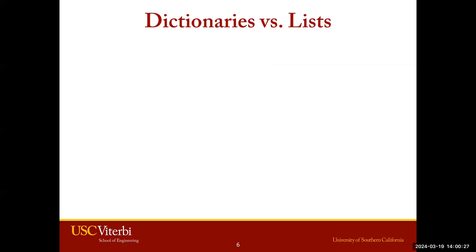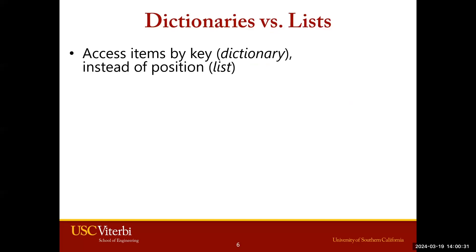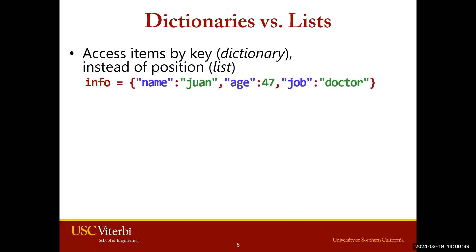Let's compare dictionaries to lists. Lists use indices to access information, but in dictionaries you access items with keys. Let's take a look at our example, the info dictionary. We have key-value pairs of name and Juan, age and 47, job and doctor. Now if we want to access information, we call the dictionary, and then within the brackets we give a key, not an index.